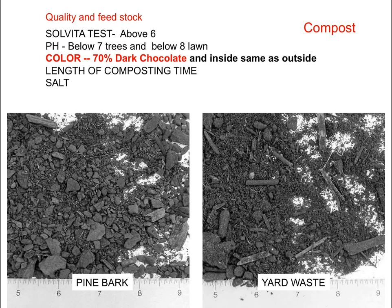The most important thing about good compost is the color. I like to use a 70% dark chocolate bar as a reference — if it's really good compost, those chunks of material should be generally the same color on the inside as the outside. You might also worry about salt, biological problems like E. coli, and other things, but generally if you get the first parts of this recipe right, you'll get reasonably good quality compost.